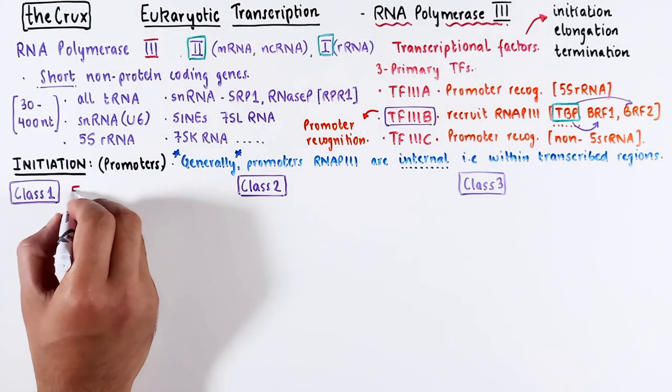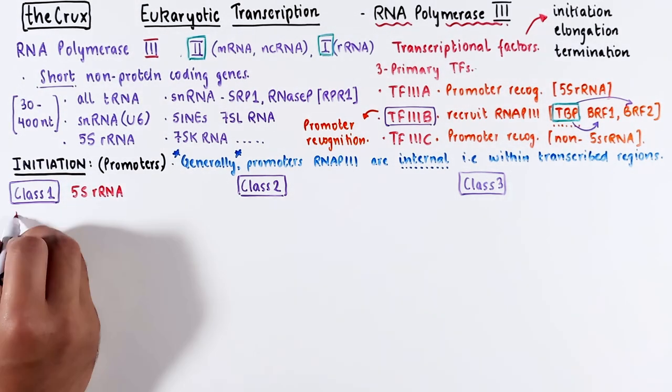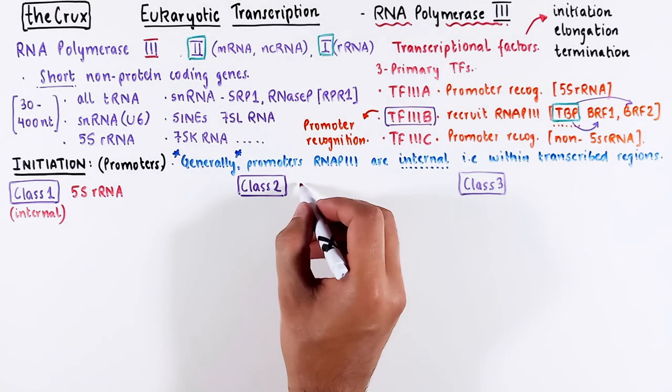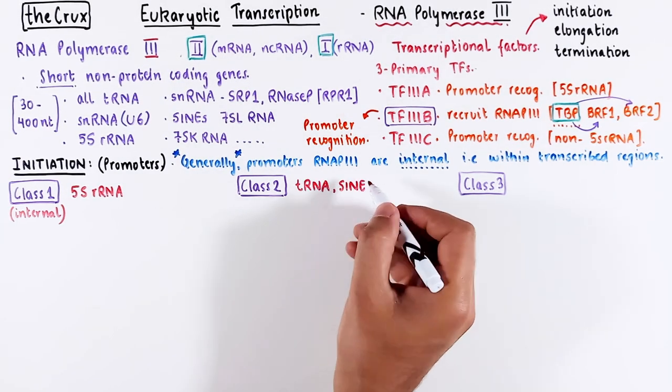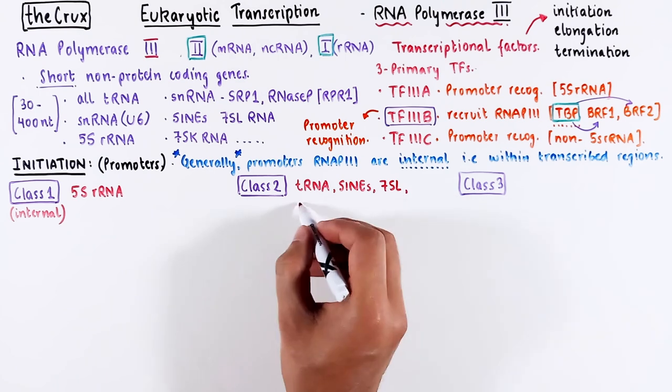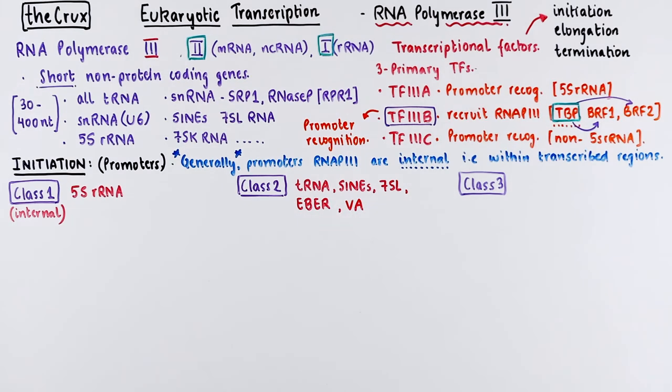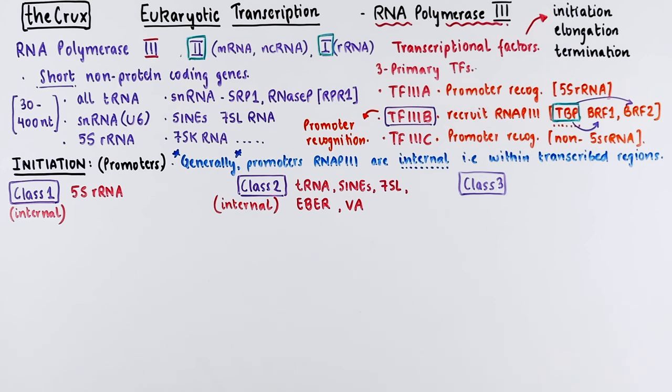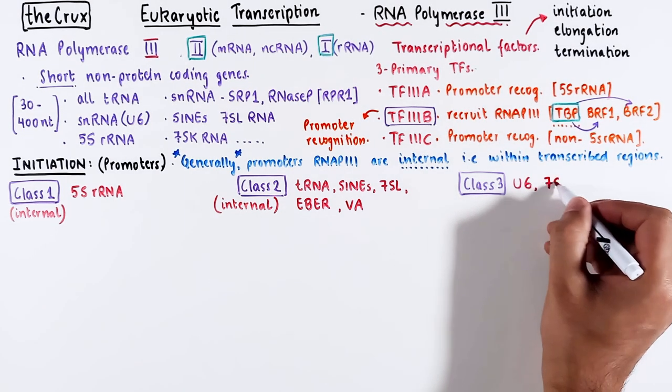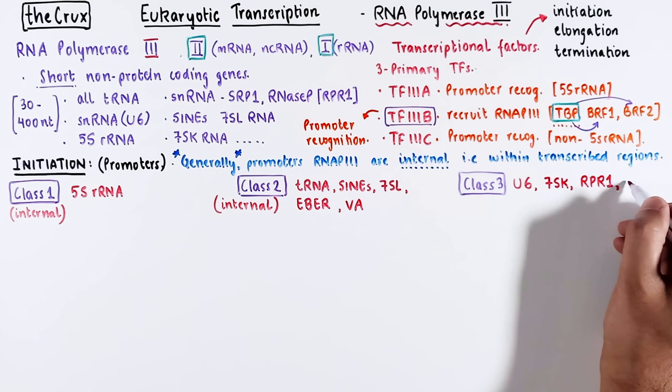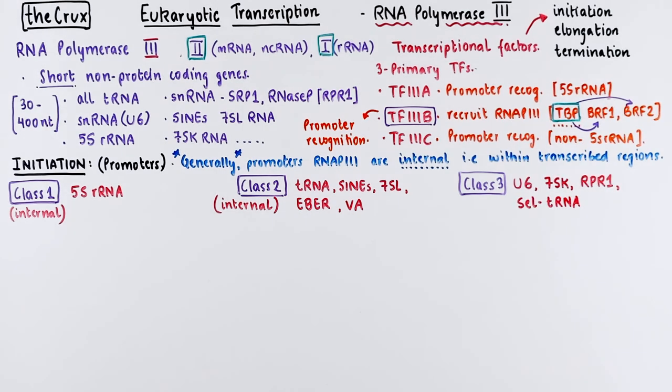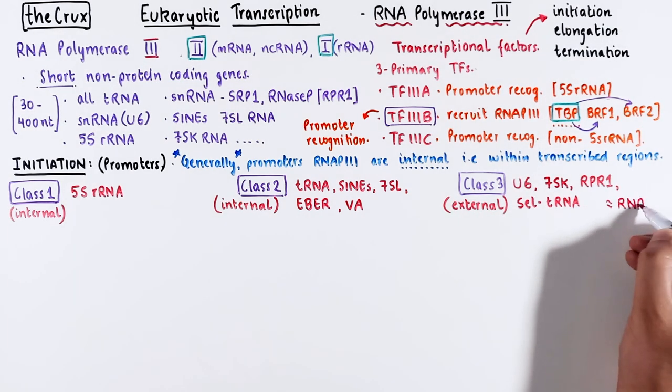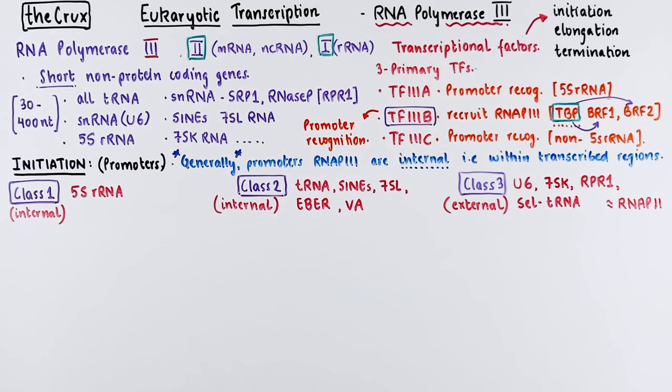Broadly, POL3 promoters can be categorized into three types. Class 1 is specific to ribosomal RNA and is an internal promoter. Class 2 includes most transfer RNAs, SINEs, 7SL, and many viral RNAs. Class 2 promoters are also internal. In contrast, class 3 comprises U6 nuclear RNA, 7SK, RPR1, and selenocysteine transfer RNAs. But these promoters are an exception because they are external and closely resemble typical POL2 promoters.